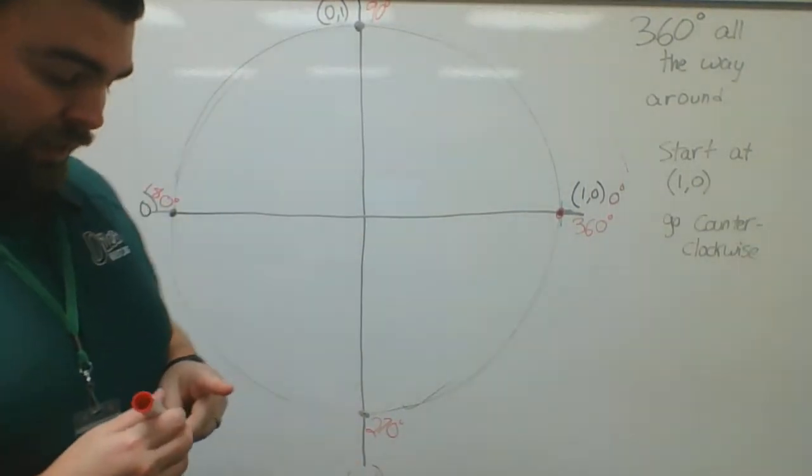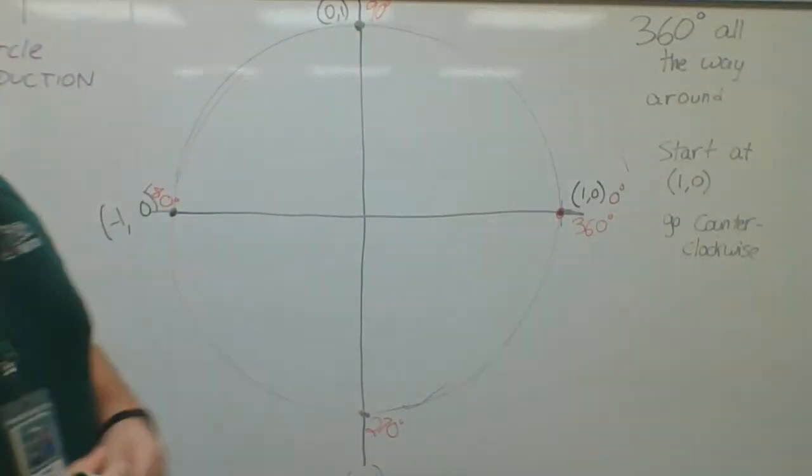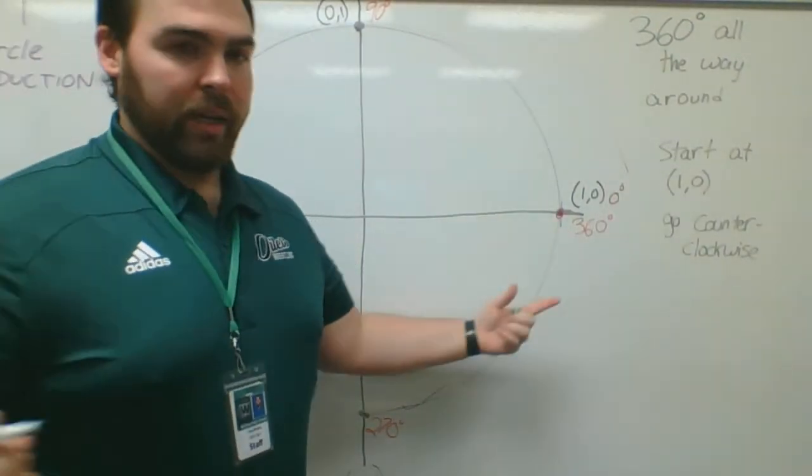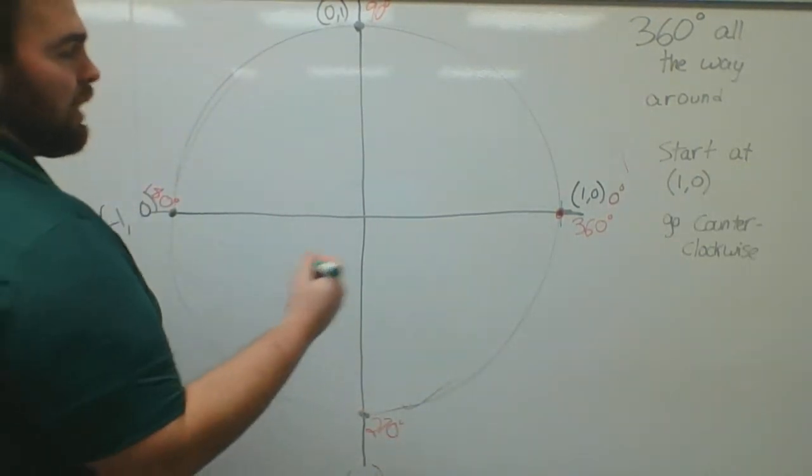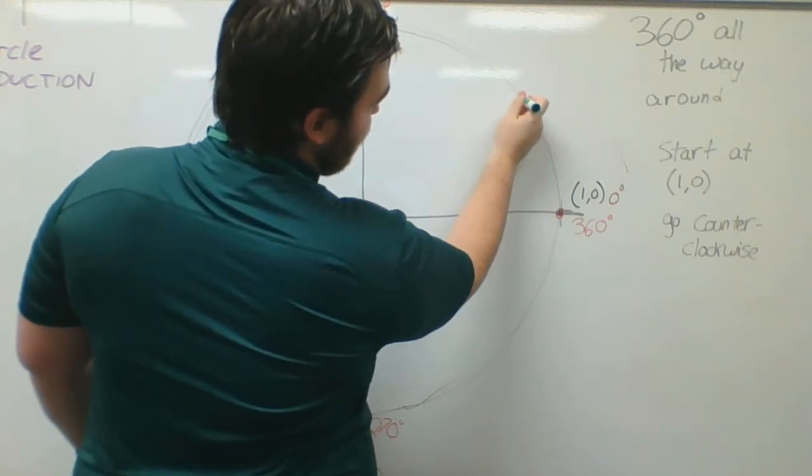We can do that with a bunch of different series. For example, something called the 30 series. 360 is divisible by 30. So I can go through and make 30 degree angles. I'm going to take this here and divide it in thirds.